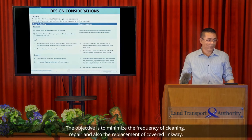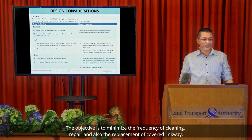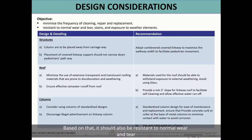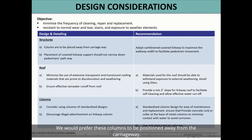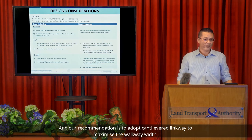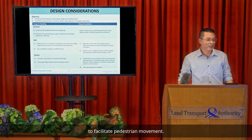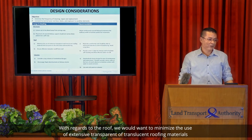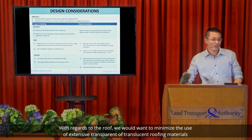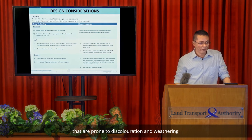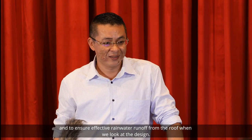For design considerations, the objective is to minimise the frequency of cleaning, repair, and replacement of Covered Linkway. It should be resistant to normal wear and tear and exposure to weather elements, especially in Singapore's context. For Covered Linkway columns, we prefer the column to be away from the carriageway to allow wider space for circulation. We recommend adopting a cantilever Covered Linkway to maximise walkway width for pedestrian movement. For the roof, we want to minimise the use of transparent or translucent roofing materials that are prone to discolouration and weathering, and to ensure effective rainwater runoff from the roof.